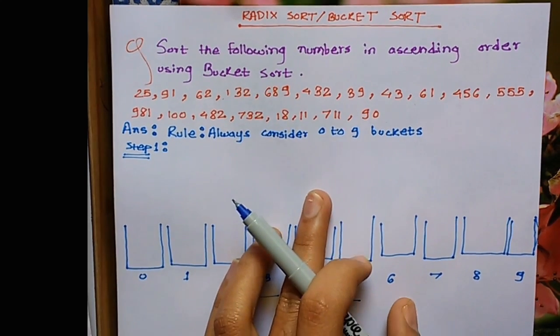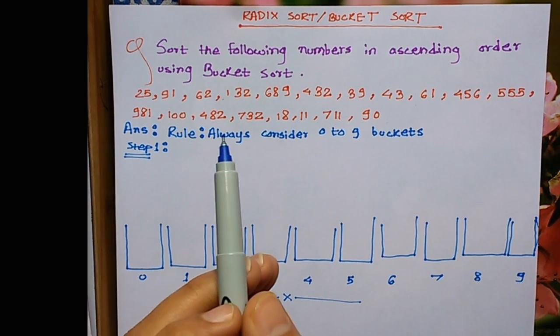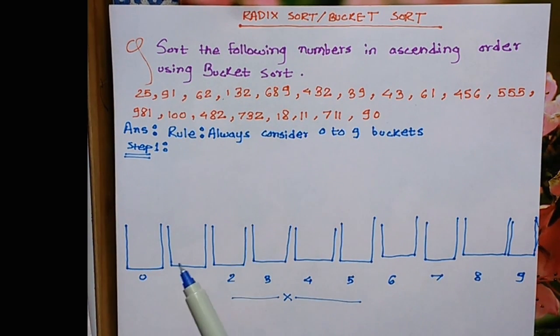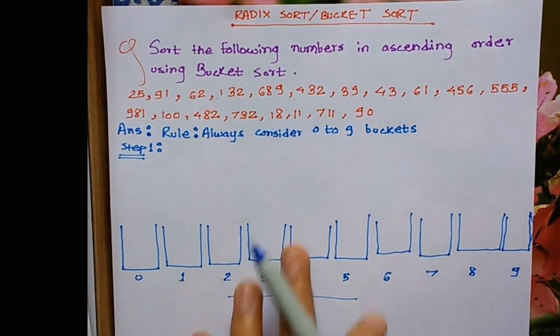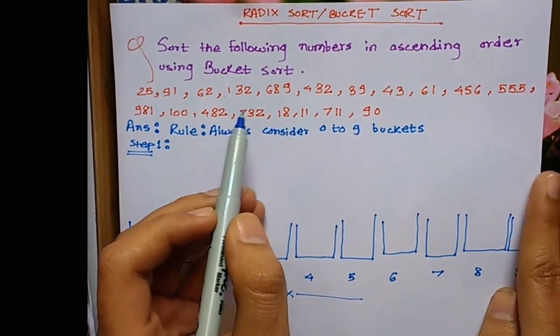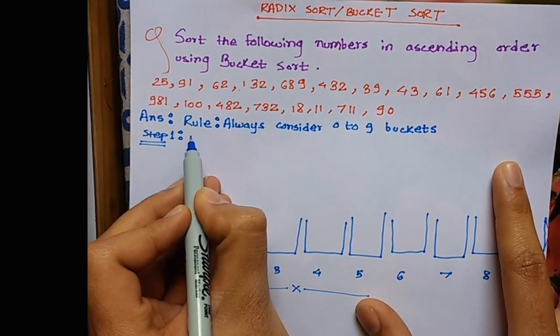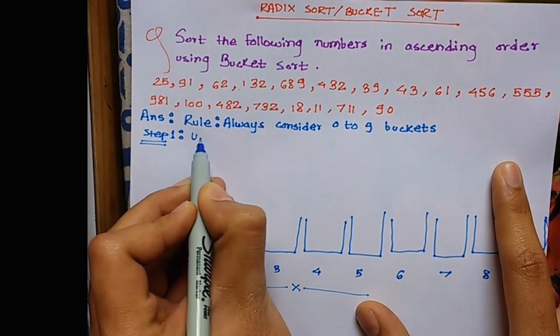Today we're learning bucket sort or radix sort, step 1. The basic rule is always consider 0 to 9 buckets. Here we can see there are 0 to 9 buckets, and these are the given list of numbers which we have to sort in ascending order using bucket sort.